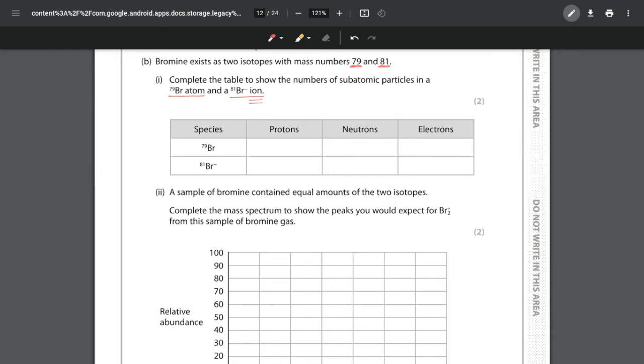This means we have a difference in the number of electrons. Let's start with the easy part. Protons is just your atomic number, which in this case for both of them is going to be 35.